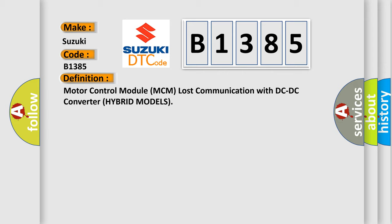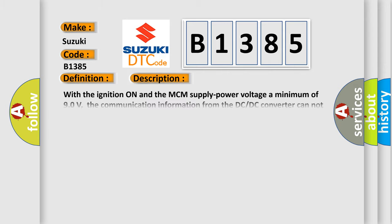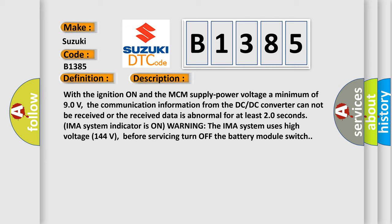The basic definition is: Motor Control Module (MCM) lost communication with DC-DC converter — hybrid models. With the ignition on and the MCM supply power voltage a minimum of 90 volts, the communication information from the DC-DC converter cannot be received, or the received data is abnormal for at least 20 seconds. The IMA system indicator is on as a warning.